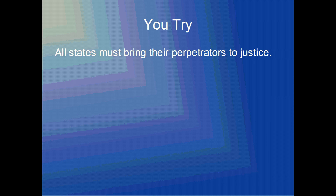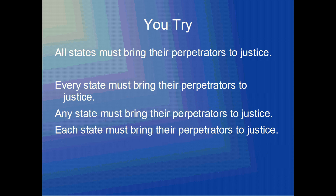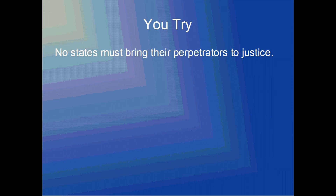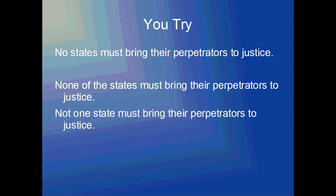So, 'All states must bring their perpetrators to justice.' To change the quantifier, we can use 'every,' 'any,' or 'each.' So: 'Every state must bring their perpetrators to justice,' 'Any state must bring their perpetrators to justice,' and 'Each state must bring their perpetrators to justice.' For the negative universal proposition — 'No states must bring their perpetrators to justice' — we have 'None of the states must bring their perpetrators to justice,' and 'Not one state must bring their perpetrators to justice.'